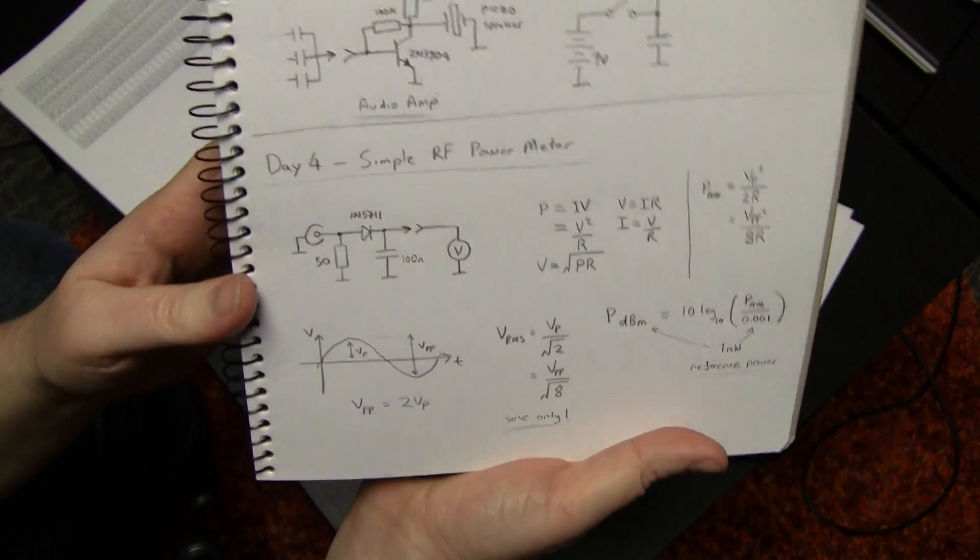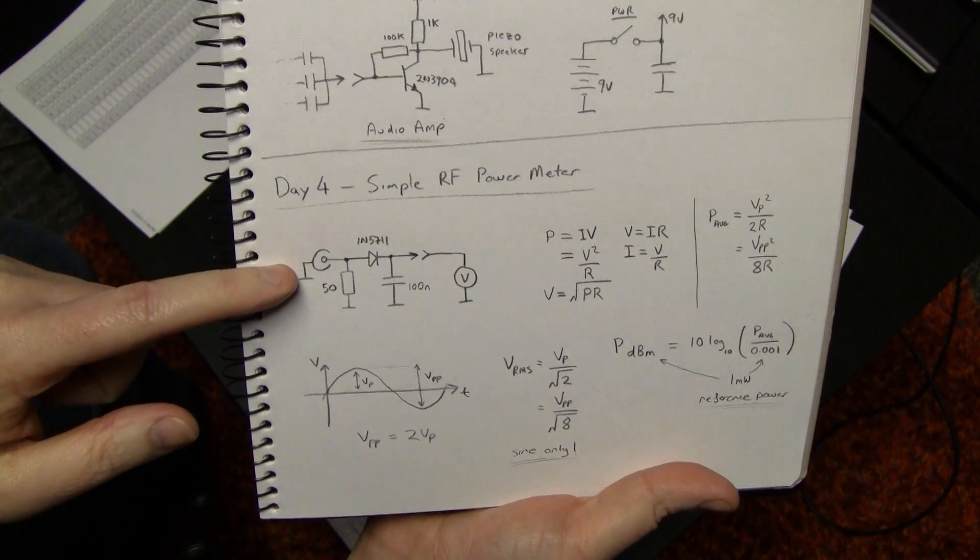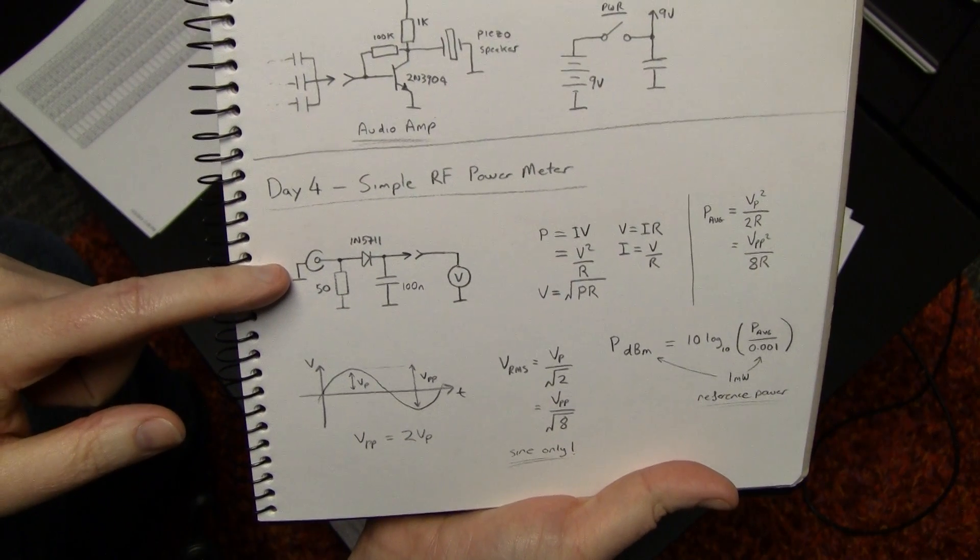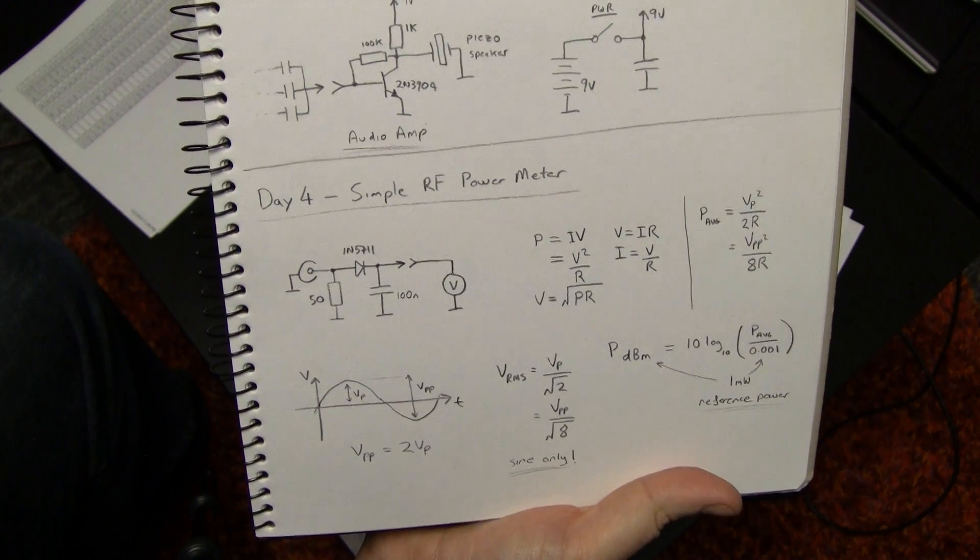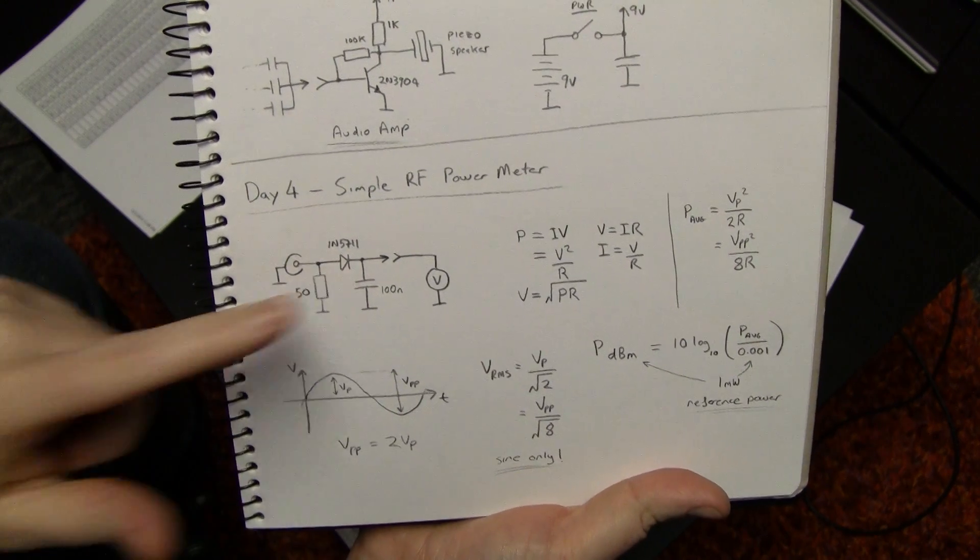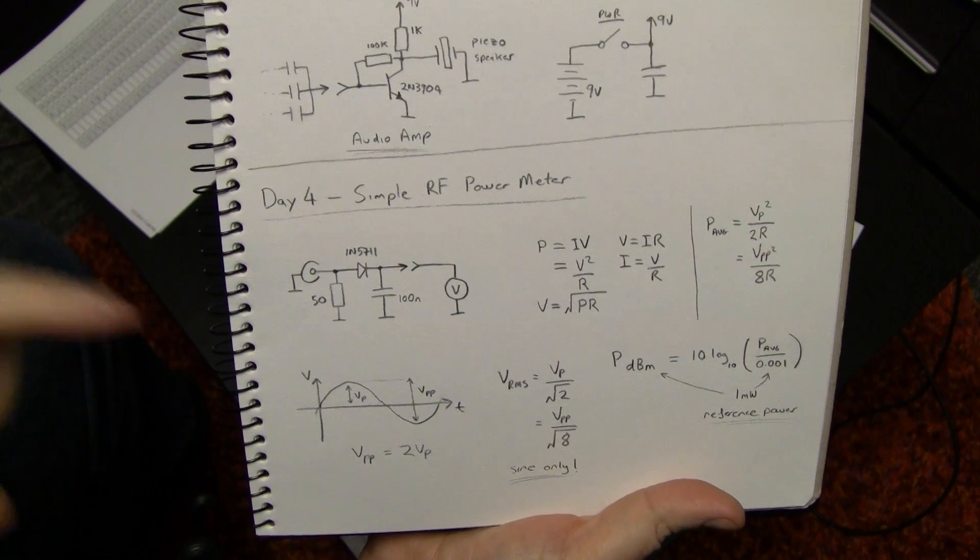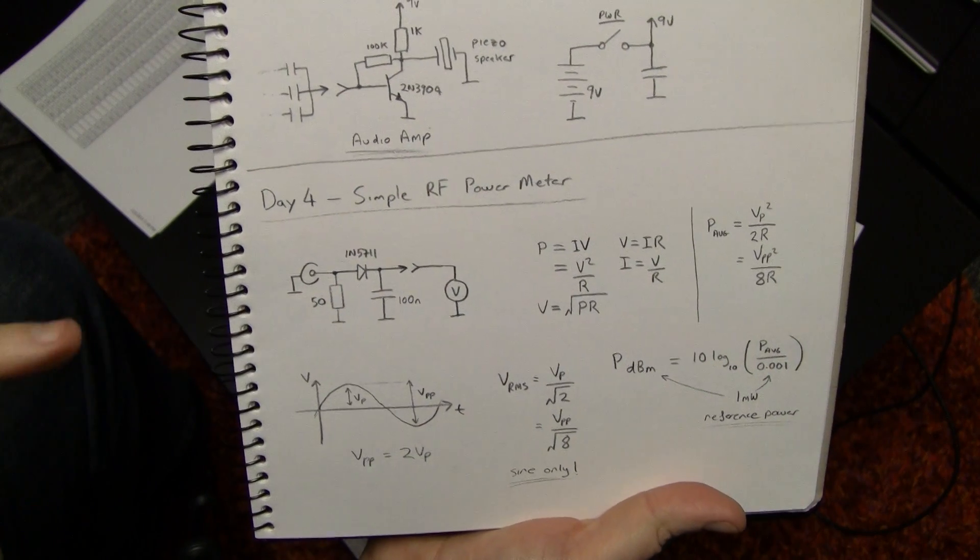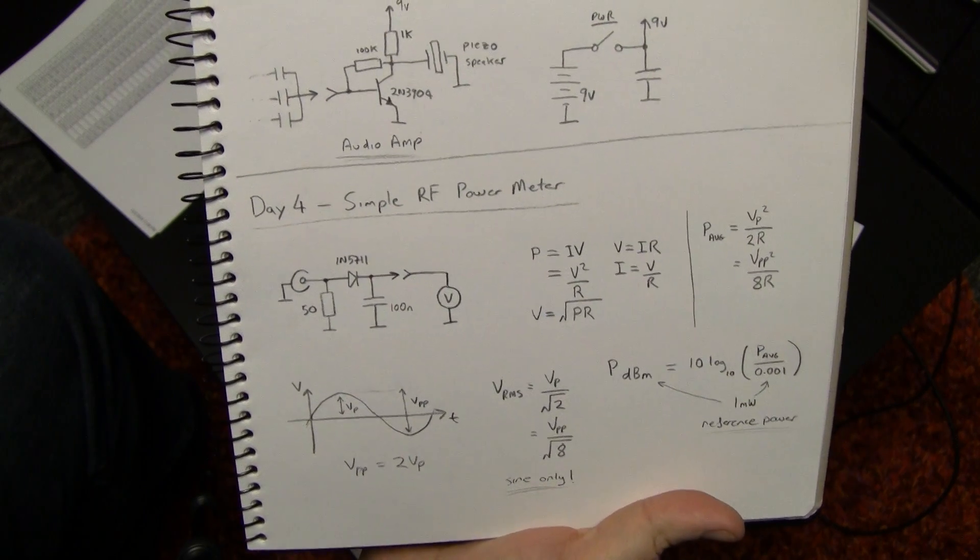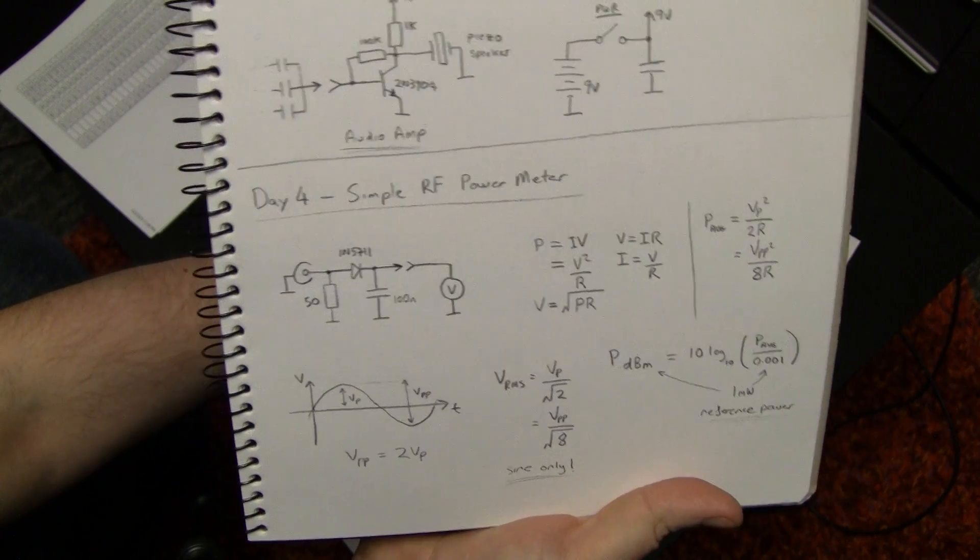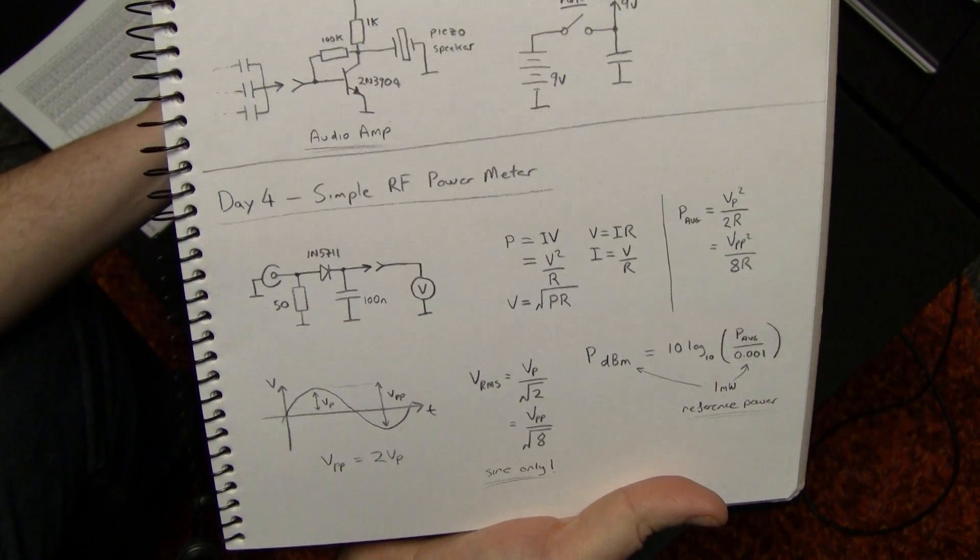You could actually calibrate this at DC if you wanted to by injecting DC into here with an equivalent DC peak value power, and it's close. I mean obviously the dynamics of the diode, the capacitance isn't there in that case, but the forward voltage drop is. So you can use that as a proxy for low frequencies, and if you do the same calibration you'll actually find that it holds out pretty well to tens of megahertz.